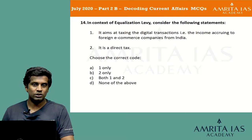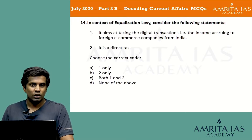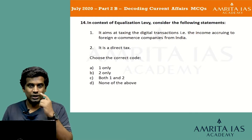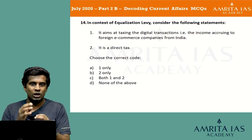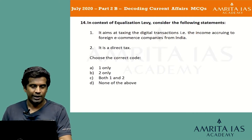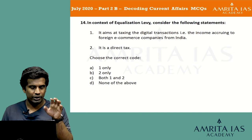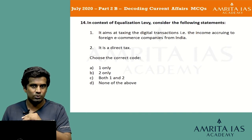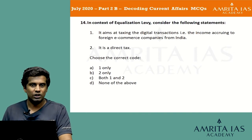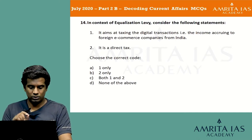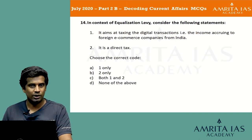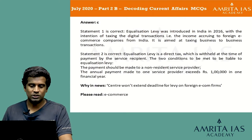The equalization levy was present in the news as it was aimed at taxing digital transactions where money was being accrued by foreign e-commerce companies. Since it is applied on them directly, there is no possibility of the burden being shifted — it is also a direct tax. So option C, both 1 and 2, are absolutely right.